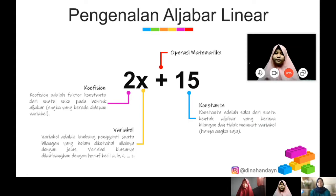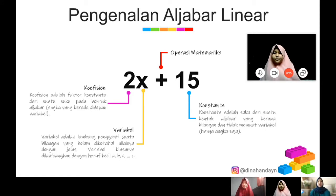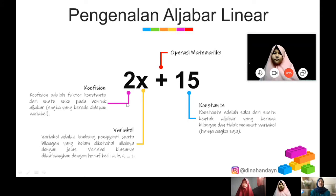Di sini ada pengenalan aljabar linier. Misalnya diberikan persamaan yaitu 2X tambah 15. Dari sini kita dapat mengetahui beberapa suku dari aljabar, yaitu koefisien, variabel, dan konstanta. Yang dinamakan koefisien adalah faktor konstanta dari suatu suku pada bentuk aljabar — yaitu angka yang berada di depan variabel. Dalam persamaan ini, yang dinamakan koefisien adalah 2.